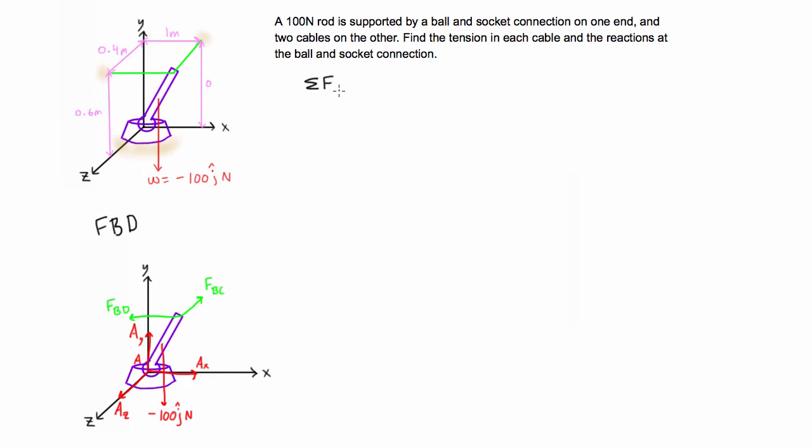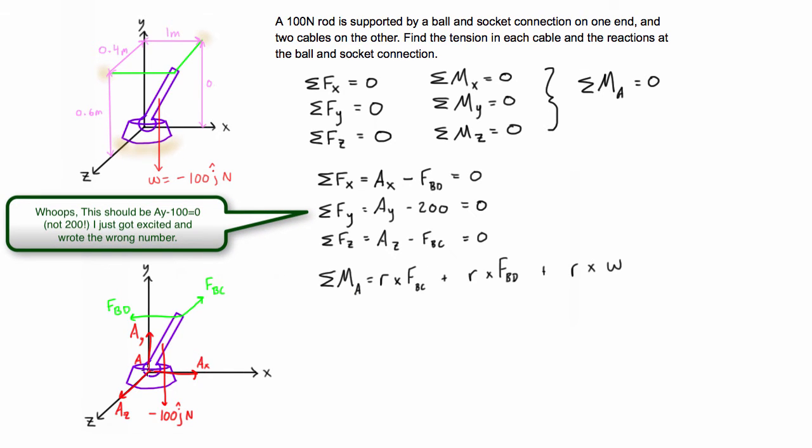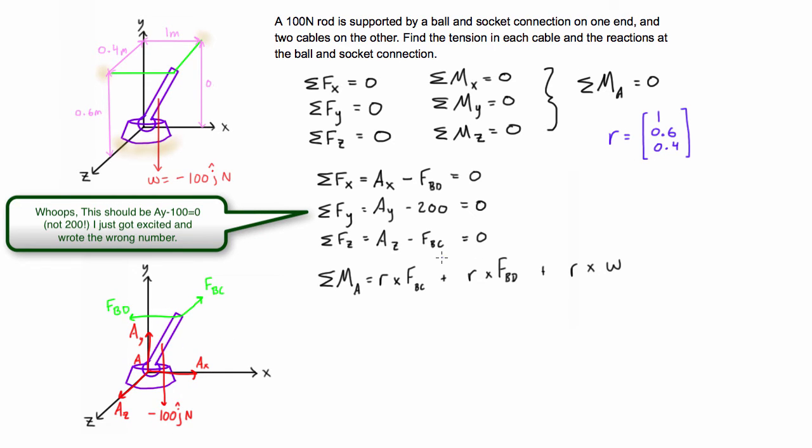So for our six equations of equilibrium, we can sum up the moments here to simplify it a little bit as just the sum of moments about some point has to be equal to zero. And that will take into consideration the three components of moments that this can possibly have. So when we go through and solve this, we'll just do the sum of forces in the X, Y and Z direction. And then we'll have our sum of moments about A, where R is the position vector from A to the point where these forces are acting on this object.